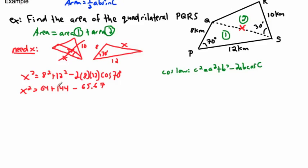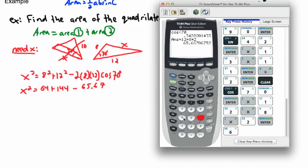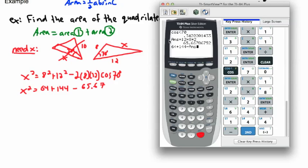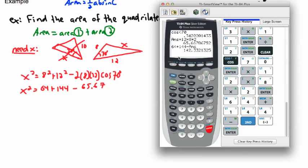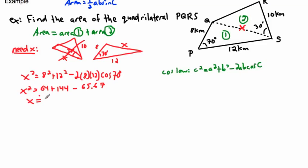Calculating: 8² = 64, 12² = 144, and 2 × 8 × 12 × cos 70° ≈ 65.67. So x² = 64 + 144 − 65.67. Taking the square root gives x ≈ 11.9. So x is approximately 11.9 kilometers — that's not the final answer, but we'll need it.